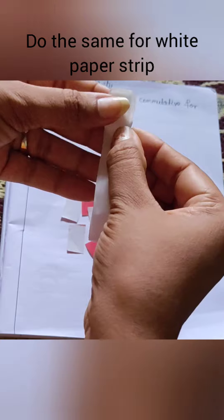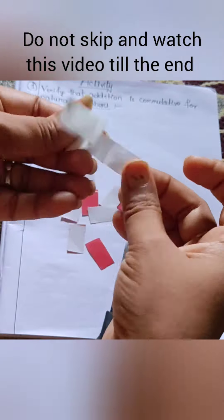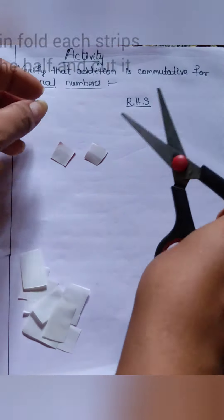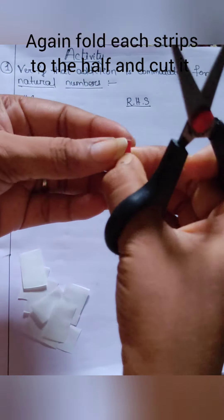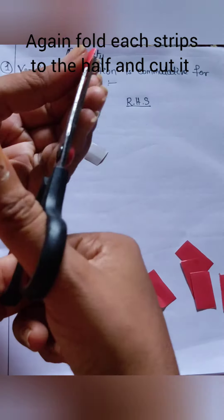Do the same for the white paper strip. Do not skip and watch this video till the end. Again, fold each strip in half and cut it so that we will get tiny paper squares.